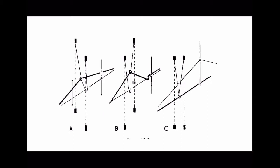In some cases, if we need to lift the standard yarn, this type of shed is called the plain shed. So we have three types of sheds: the open shed, where the crossing yarn forms the shed on its natural side; the crossed shed, where the crossing yarn forms the shed on the other side of the standard yarn; and the plain shed, where the standard yarn is lifted up and the crossing yarn forms the bottom shed.